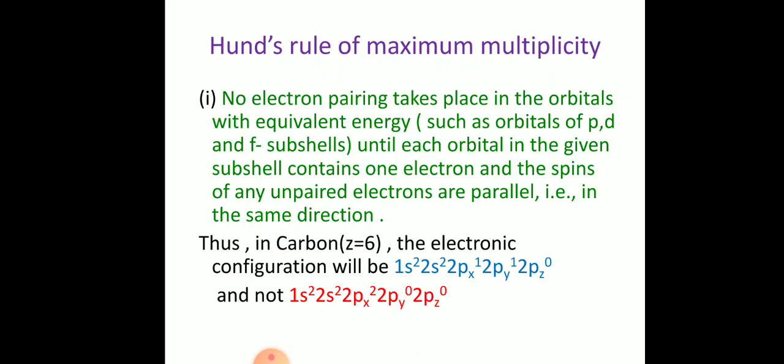Next, we have Hund's Rule of Maximum Multiplicity. The first statement is: no electron pairing takes place in orbitals with equivalent energy, such as orbitals of p, d, and f sub-shells, until each orbital in the given sub-shell contains one electron. The spins of any unpaired electrons are parallel, that is, in the same direction.